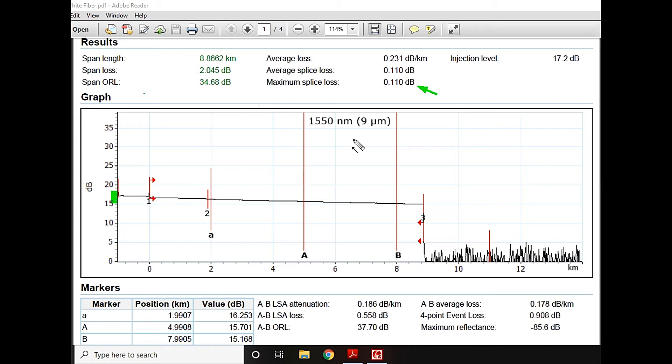Once you solve that maximum splice loss, the graph will automatically detect the second one, which is lower than this. For example, if I have 0.30 and 0.25, first of all the maximum splice loss will be 0.30. But when that splice loss is solved and goes down, the other area will automatically check the second highest one and show the second highest one. That's why this is going to be very important.